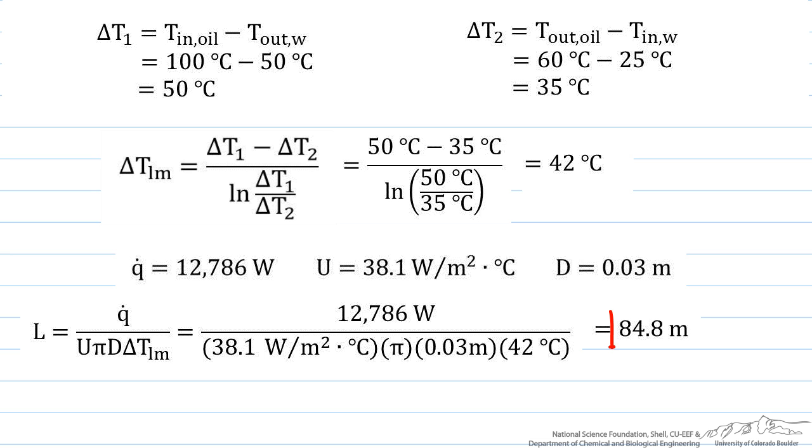We compare this for the length of a parallel flow heat exchanger, which is 110.6 meters. Why is there a difference? Because the delta T, or the difference in temperature, is greater along the tube, you need less surface area for the same amount of heat transfer. Therefore, we would need a shorter length for the counter-flow heat exchanger.